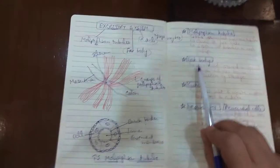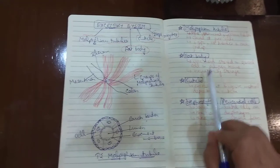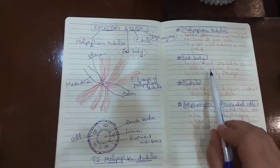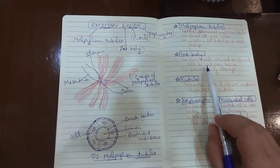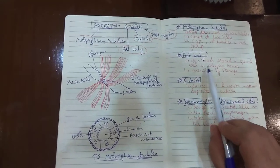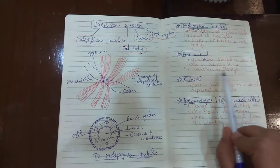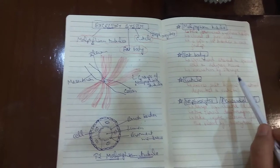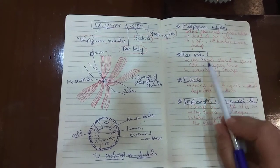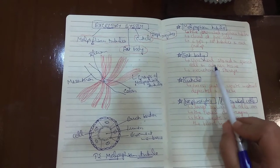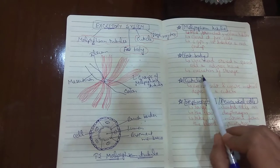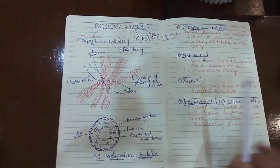Then comes the fat body. Fat body is basically adipose tissue in which uric acid is stored in special cells. This type of excretion is referred to as excretion by storage.